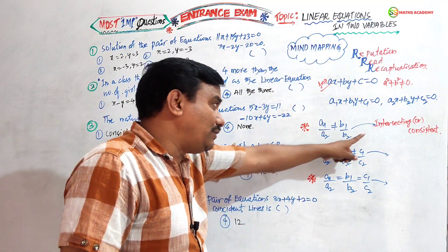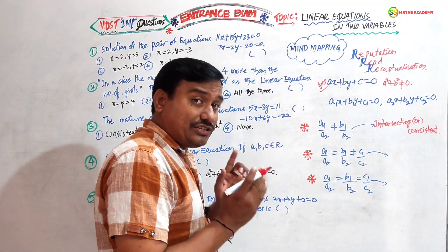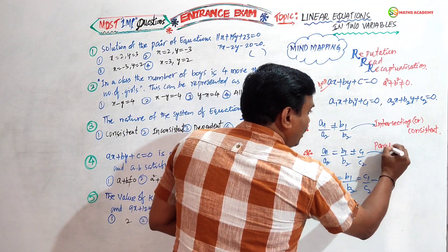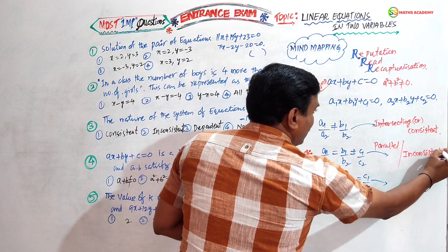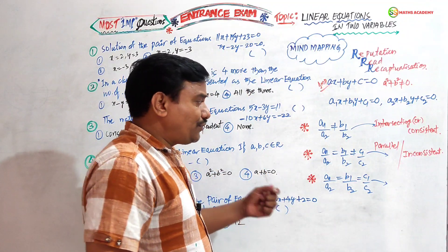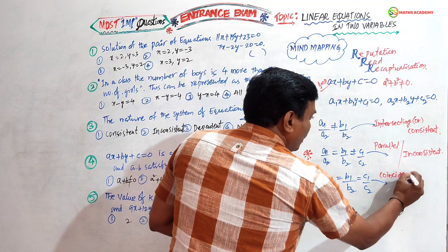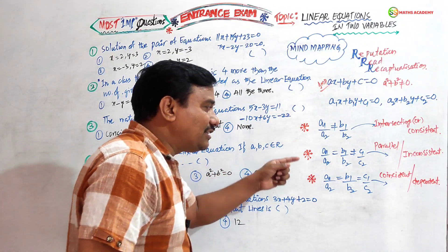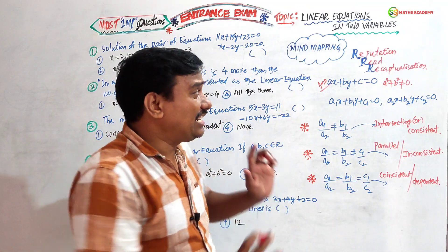Second condition: a₁/a₂ = b₁/b₂ but the constants are not equal — then we say these lines are parallel to each other, or inconsistent. Remember: parallel is inconsistent. Third condition: all the ratios of coefficients are equal — a₁/a₂ = b₁/b₂ = c₁/c₂ — then we say the lines are coincident, or dependent and consistent. These three natures are very very important.